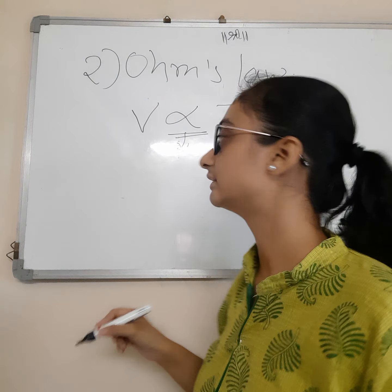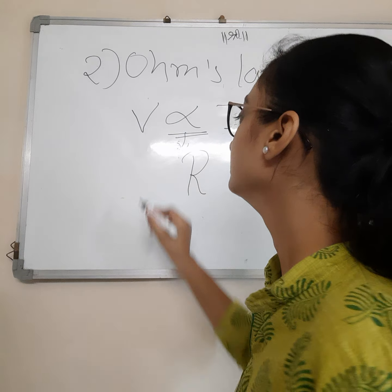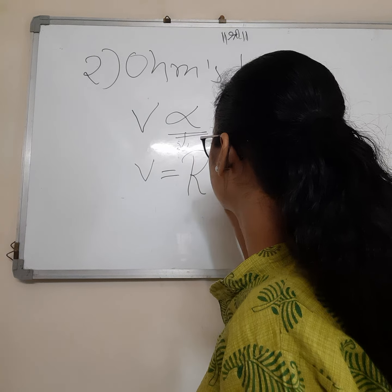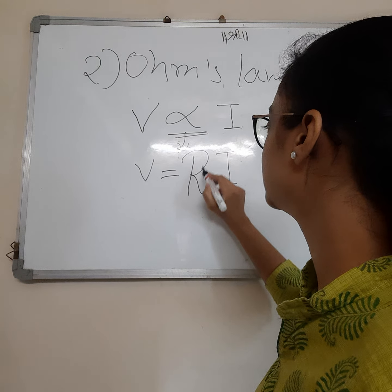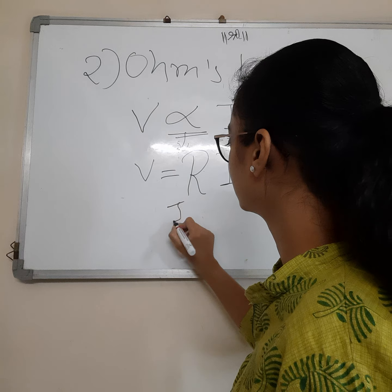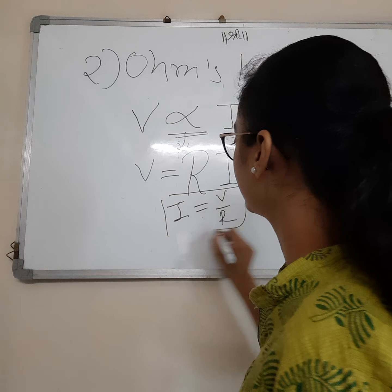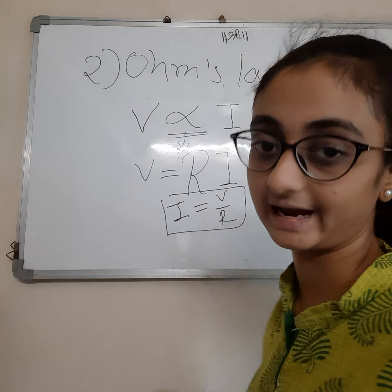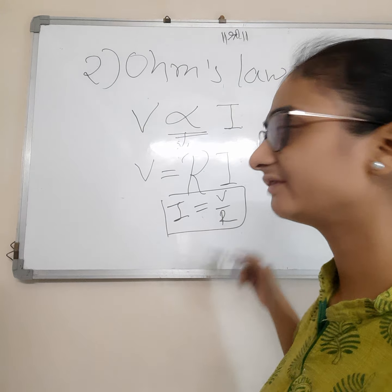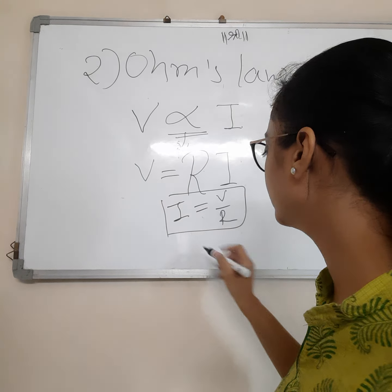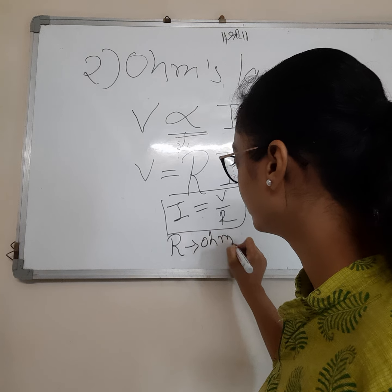Now, what is potential difference? If we see an exactly horizontal wire or tube and we flow water through it, the water will not flow because the difference between the two ends is zero. If we bend it slightly, then the water will flow. This difference between the two ends is analogous to potential difference.